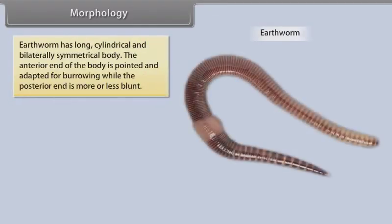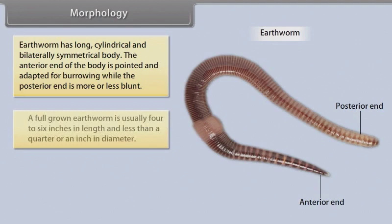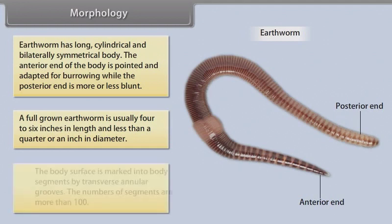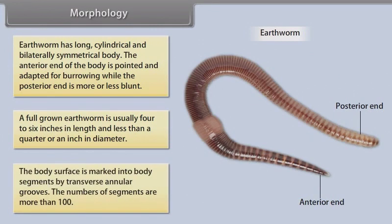Morphology. Earthworm has a long, cylindrical and bilaterally symmetrical body. The anterior end of the body is pointed and adapted for burrowing, while the posterior end is more or less blunt. A full-grown earthworm is usually 4-6 inches in length and less than a quarter of an inch in diameter. The body surface is marked into body segments by transverse annular grooves, and the number of segments is more than 100.